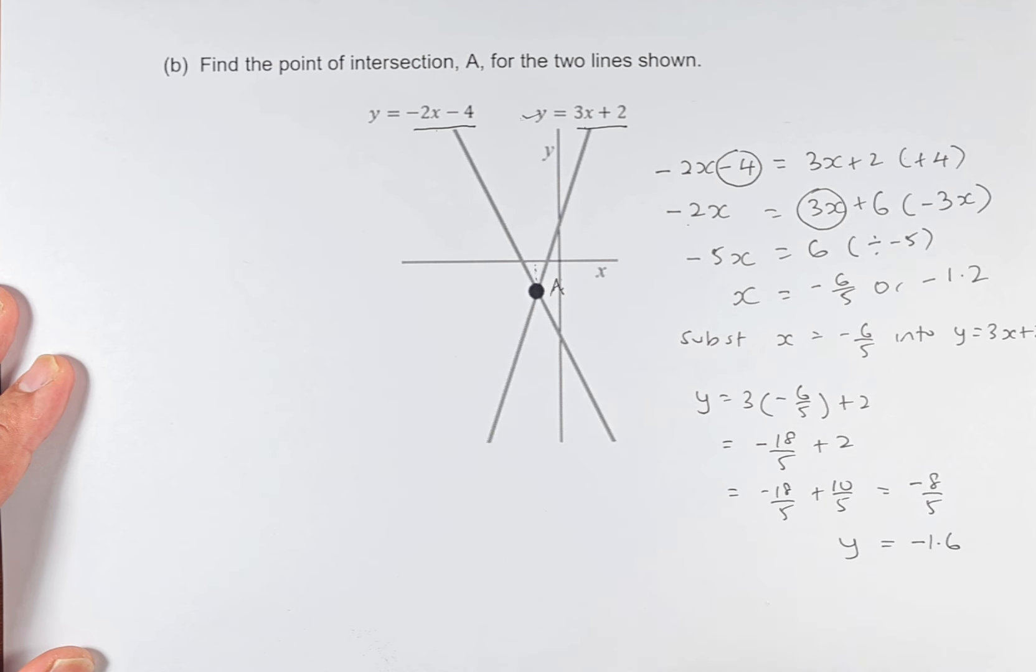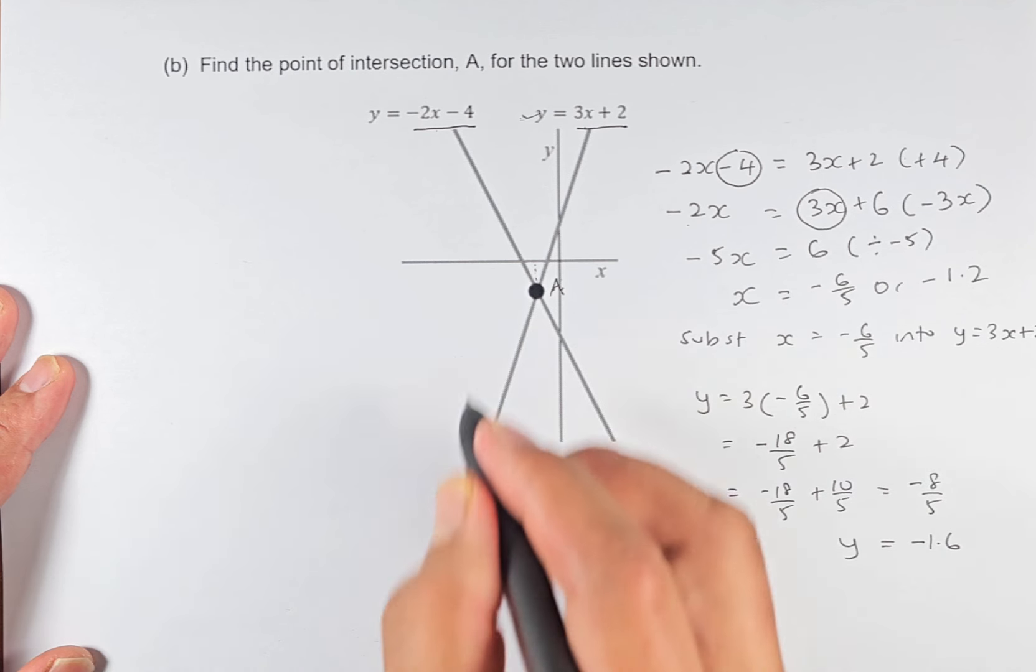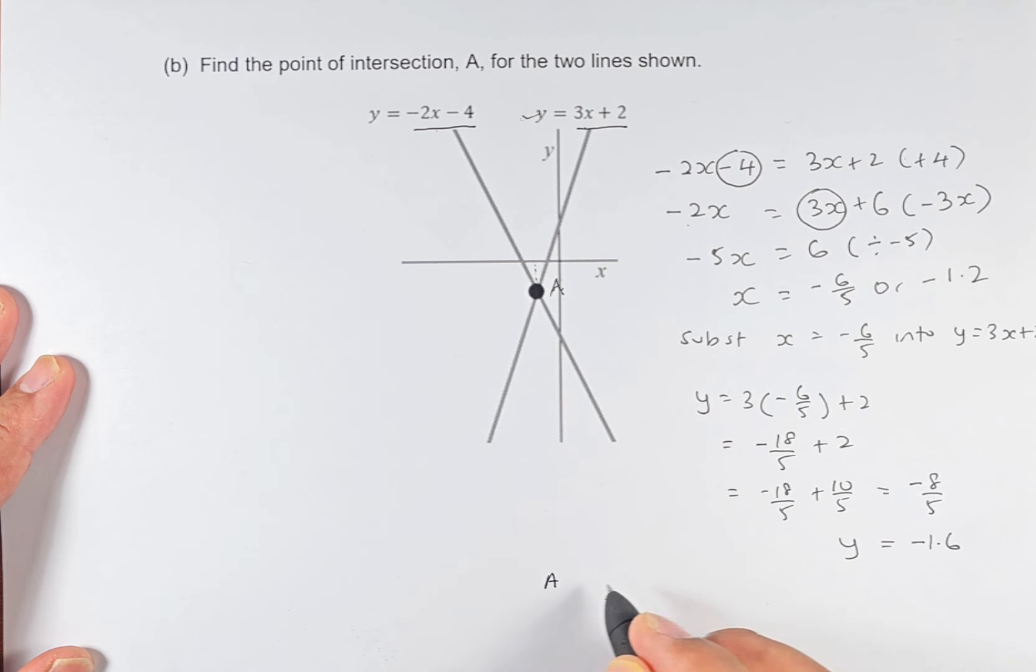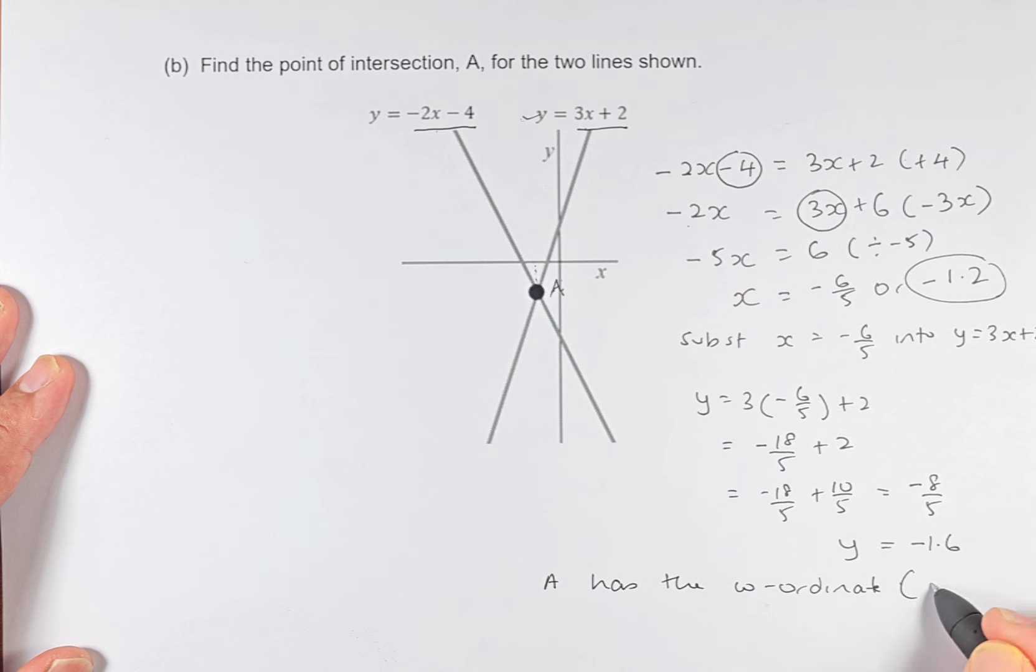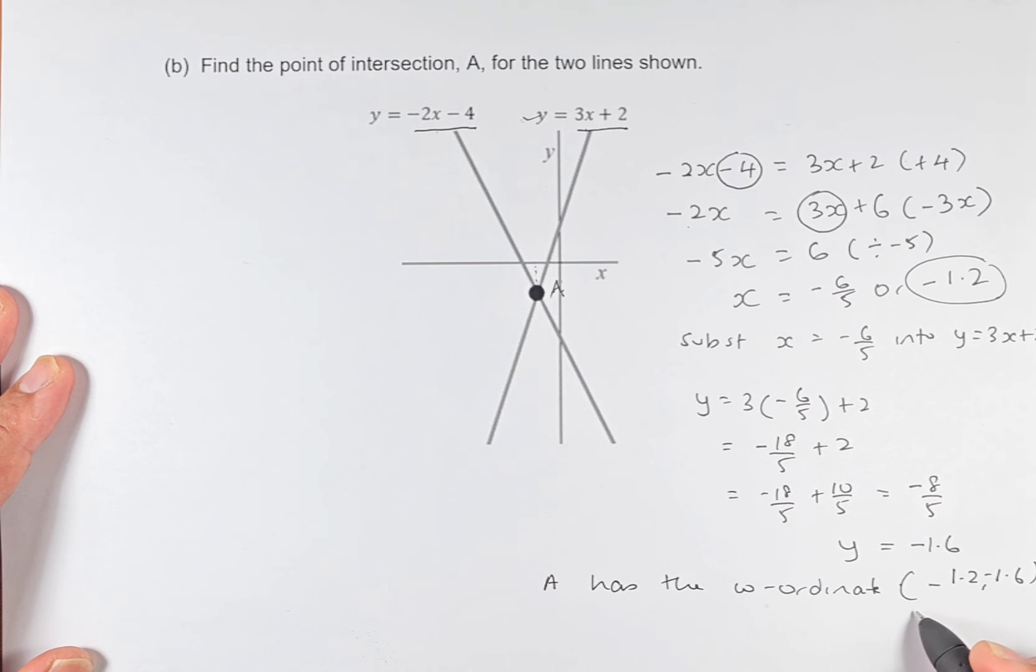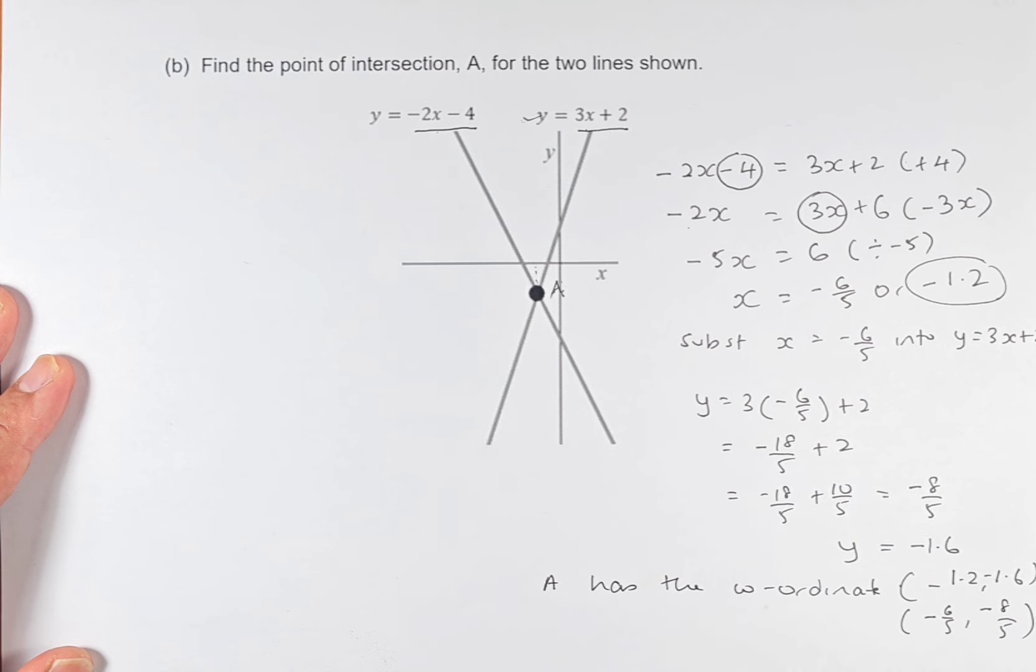So y equals -1.6. So if you can find the coordinate of that point, point A has the coordinate of -1.2 for x and -1.6 for y. Or if you prefer fractions, it's -6/5 and -8/5. Both answers are acceptable.